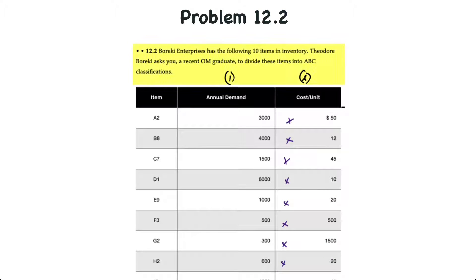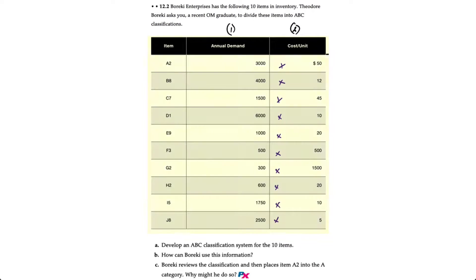Here, we have a company that has 10 items in inventory, and the manager, Theodor Borecki, asks you to divide the items into ABC classifications. So we have a table here with three columns: item, annual demand, and unit cost.